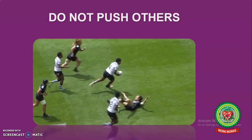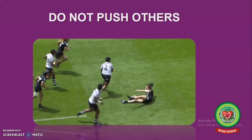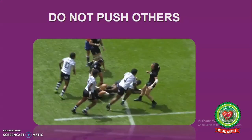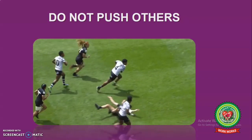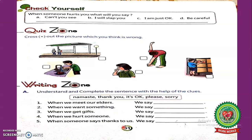Third: do not push others. Students, you should never push your friends while playing. Now students, open your book at page 51. We will discuss the quiz zone exercise: cross out the picture which you think is wrong.